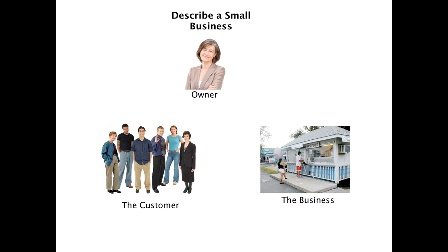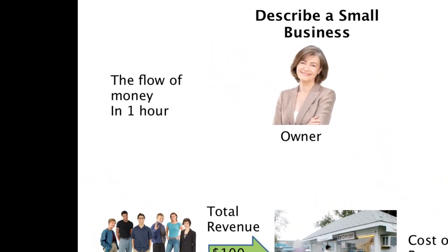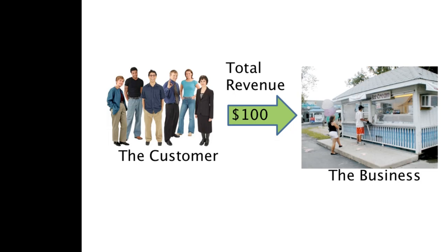Those three parts — owner, business, and customer — apply regardless of the size of the business. It could be Nancy's small ice cream stand or General Electric. Now that the model is established, let's look at how money flows through Nancy's business, using one hour as our time frame. I've never owned an ice cream stand, so these are just generic figures.